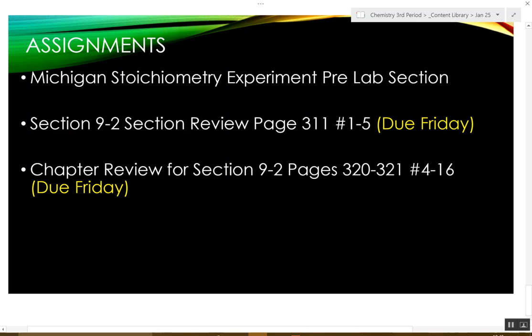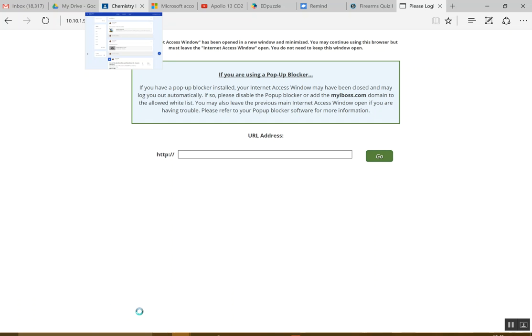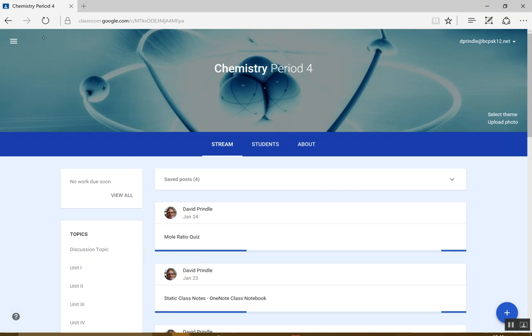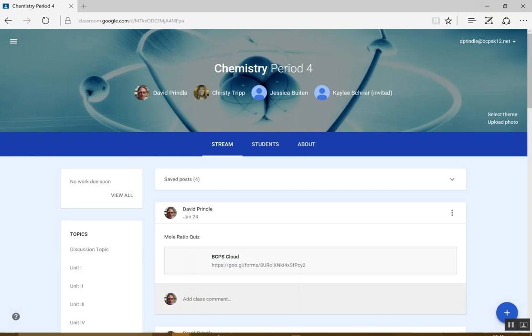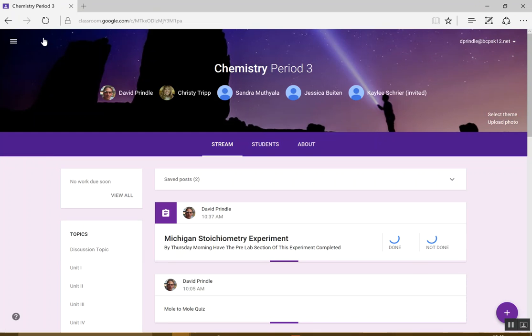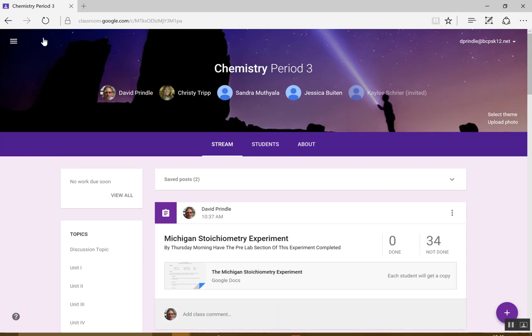Now, what I want you to do right now is go to Classroom. What happened? Whoa, here we go. It's happening. Go to Google Classroom and you will see the Michigan Stoichiometry experiment there.